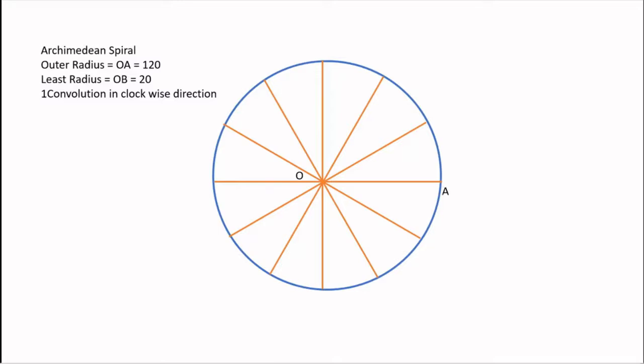Point A represents the outermost radius point. So, OA here is 120 mm. On this, I take a point B which is at a distance of 20 mm from the center. Now, since the Archimedean Spiral is to be made for one convolution in clockwise direction, I will be naming the points in clockwise direction as shown.